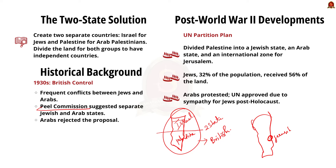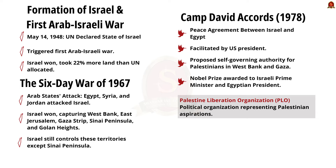After World War II, the United Nations proposed another partition plan, dividing Palestine into three parts: a Jewish state, an Arab state, and an international zone for Jerusalem. Under this plan, Jews who were 32% of the population received 56% of the land. The UN General Assembly approved the plan due to sympathy for Jews after the Holocaust. On May 14, 1948, the state of Israel was declared, triggering the first Arab-Israeli war. By the end of the war, Israel had taken 22% more land than the UN plan had allocated.